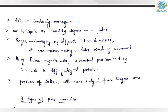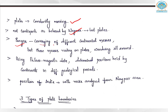These plates are constantly moving. When we discussed the continental drift theory — given by Alfred Wegener — he said continents started breaking and moving around 200 million years ago. But it is not exactly the continents that moved; the plates moved, and the continents rest on those plates. Pangaea, the supercontinent, was the convergence of different continental masses into a single body, but these masses were resting on plates that were wandering all around.